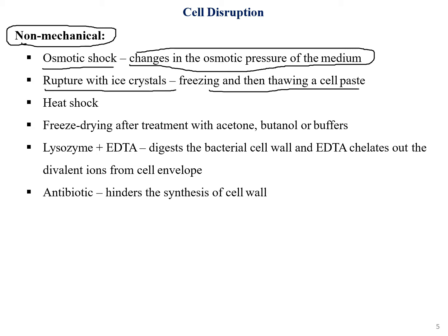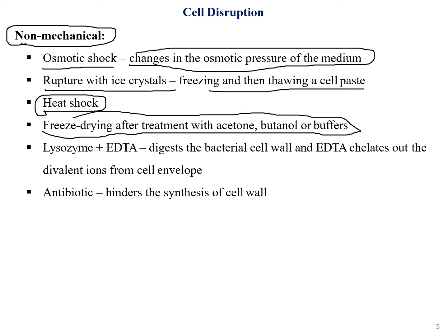The second non-mechanical method is rupture with ice crystals — freezing and then thawing a cell paste. After storing isolated cells at minus 20°C, we thaw them by warming the test tube between our hands so the cells break down. Another method is heat shock, which is also very successful. Freeze drying after treatment with acetone, butanol, and buffers is also used.